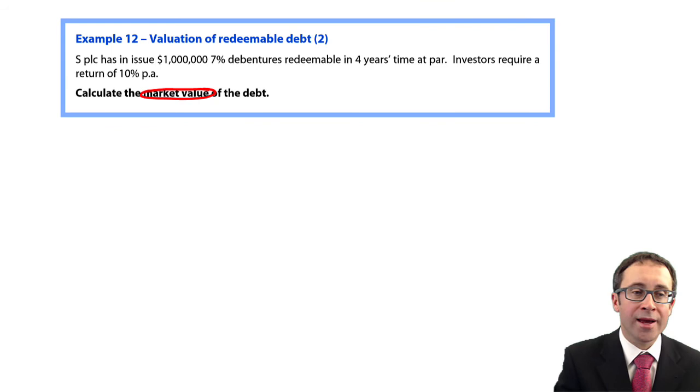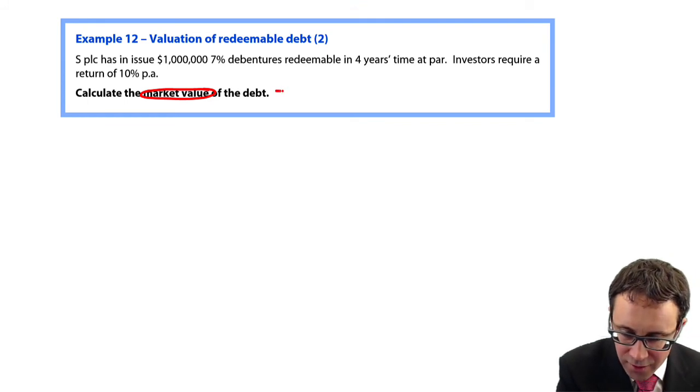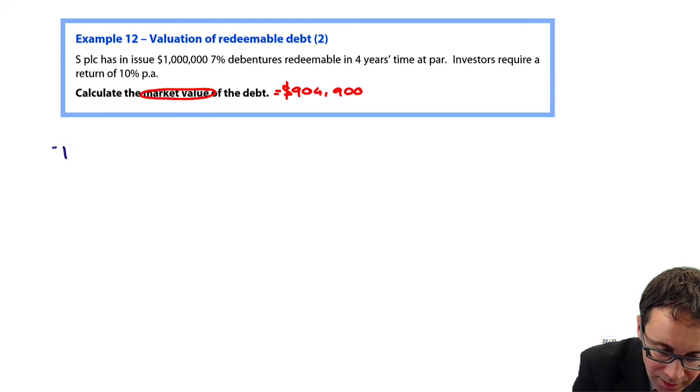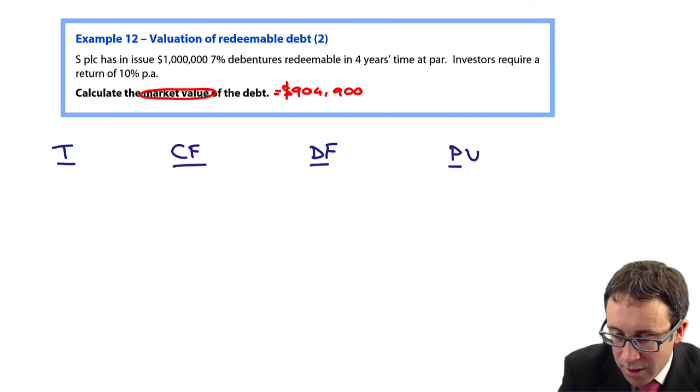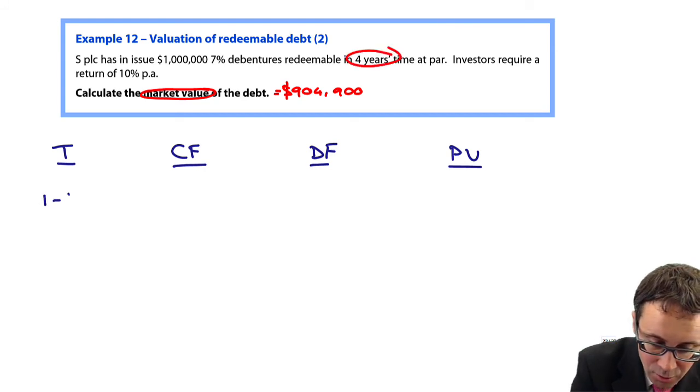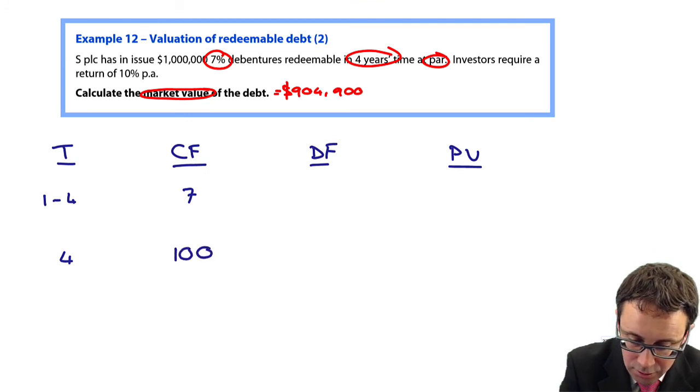How did you get on with that one? I think the market value of the debt, we'll find out if I'm right in a moment, I think was 904,900, if you're working it out in total. Where did we get that from? Again, time period, cash flow, discount factor, present value. Here, it's in four years' time, so that's T1 to four, redeemable in four. Interest based on the coupon rate is seven, and it's going to be redeemed at par, so no premium, just at par.